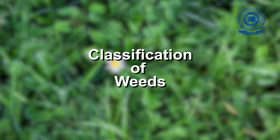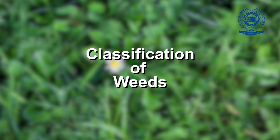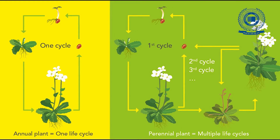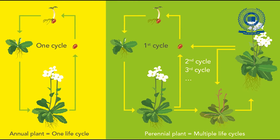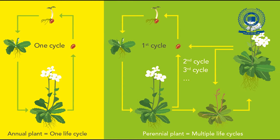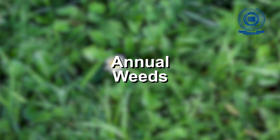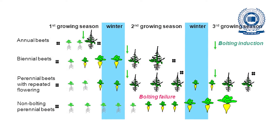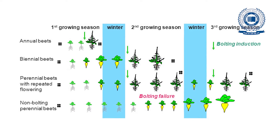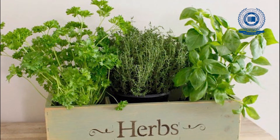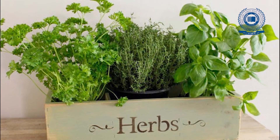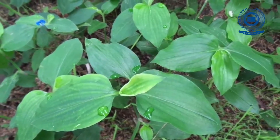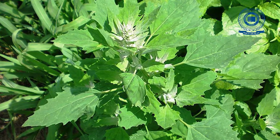Classification of weeds. Based on lifespan or ontogeny, weeds are classified as annual weeds, biennial weeds, and perennial weeds. Annual weeds are weeds that live only for a season or a year and complete their life cycle in that season. These are small herbs with shallow roots and weak stem. Example: Commelina benghalensis and Chenopodium album.